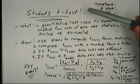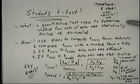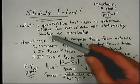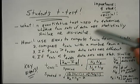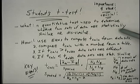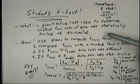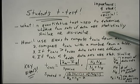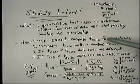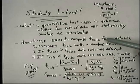What the Student's T-Test is, or what it does for us, is it's a quantitative test used to determine whether two sets of data are statistically similar or statistically dissimilar — whether there's a statistical difference between two sets of data. What you're always going to have is data set A and data set B, two different data sets with replicate measurements in each.